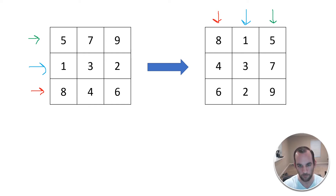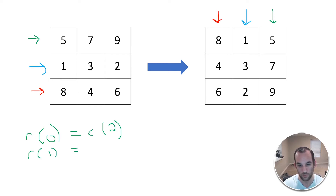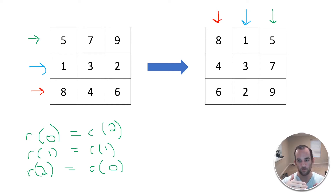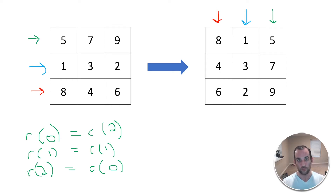So there's a pattern here: row 0 equals column 2, row 1 equals column 1, and row 2 equals column 0. The first row becomes the last column, the middle row becomes the middle column, and the last row becomes the first column. This is the same for the 4×4 matrix — we're just turning rows into columns.